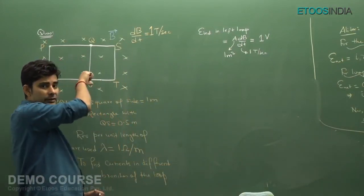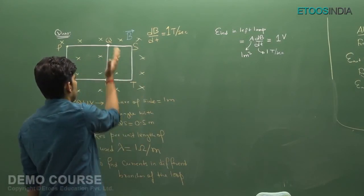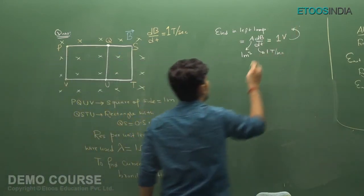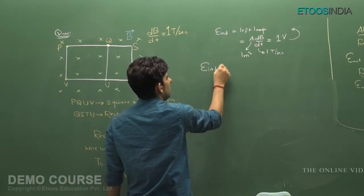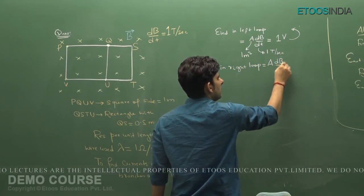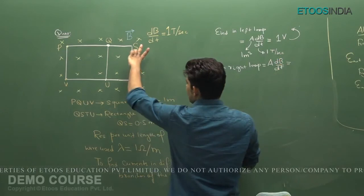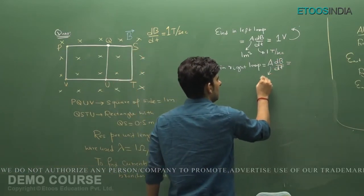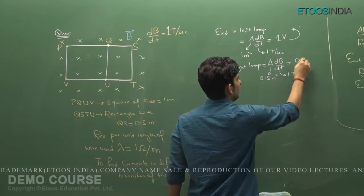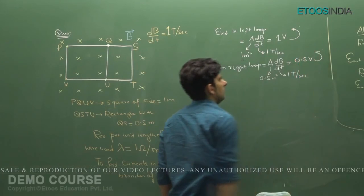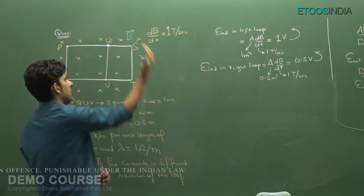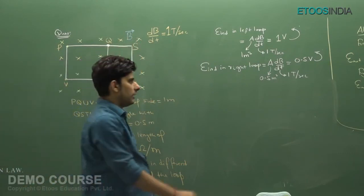By Lenz's law, the field is increasing into the page, so the induced magnetic field opposes it — it will be out of the page — and the induced EMF will be anti-clockwise. For the right loop: induced EMF = Area × dB/dt. The area is 1 × 0.5 = 0.5 meter² and dB/dt = 1 T/s, giving 0.5 volt. The sense is again anti-clockwise, because the field is into the page and increasing, so the induced field is out of the page.